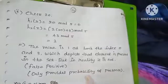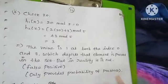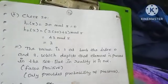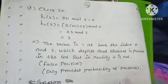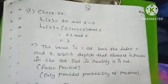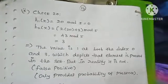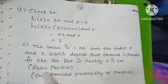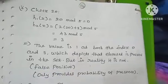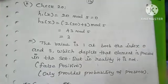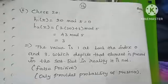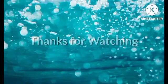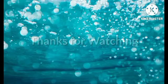The Bloom filter only provides the probability of presence. The result may show the element is present, but in reality it may not be — this is a false positive. The filtering algorithm is now clear. Thank you students, thanks for watching. Please subscribe and share the video.